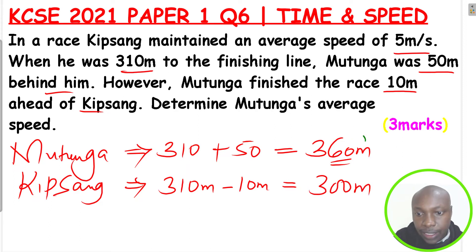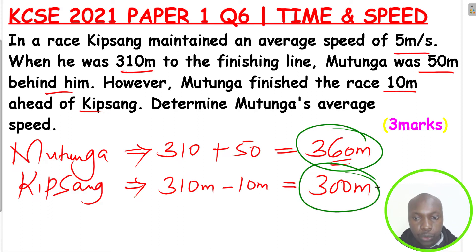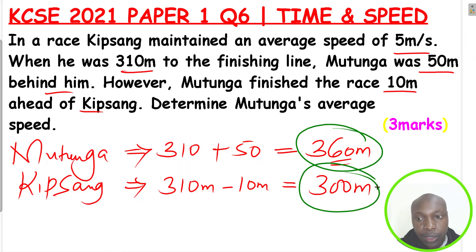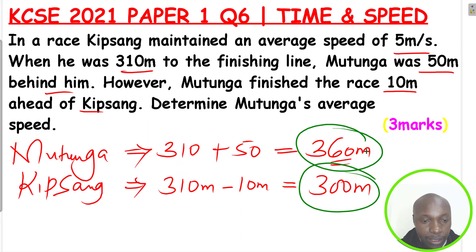Now, these are the distances that are going to help us: for Mutunga, 360 meters, and for Kip Sang, 300 meters. There is something else that will assist us to get Mutunga's average speed. We are given Kip Sang's average speed. Having the distance and the speed, we can get the time. For Mutunga to cover 360 meters and Kip Sang to cover 300 meters, they had to use the same time.